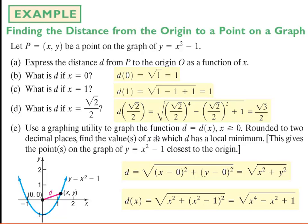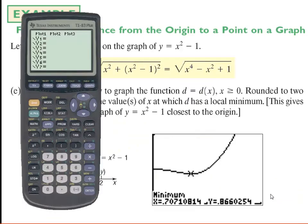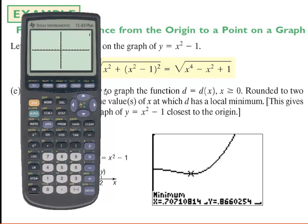Letter E says to use a graphing utility to find the value of x at which the distance has a local minimum. Visually, it looks like around x equals 0.5 or 0.6 might give the minimum distance. In the graphing calculator, I hit y equals and enter the square root of x to the fourth minus x squared plus 1. After graphing using zoom decimal, I can see there's a local minimum here and a symmetric one on the other side.